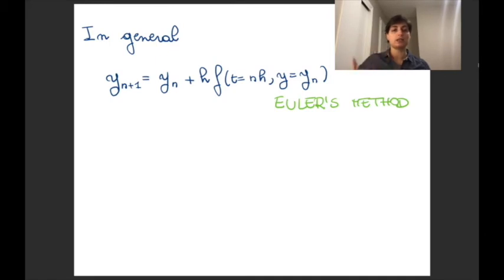We can do this iteratively. So after each step, we construct the next step in the same way. So we have a sequence that is y_(n+1) equals to y_n, the previous step, plus h, that is the step size, multiplied by the tangent line at the previous step. So f with t equals to nh and y equals to y_n. This is called the Euler's method. It's a very simple numerical method to approximate solutions of ODEs.